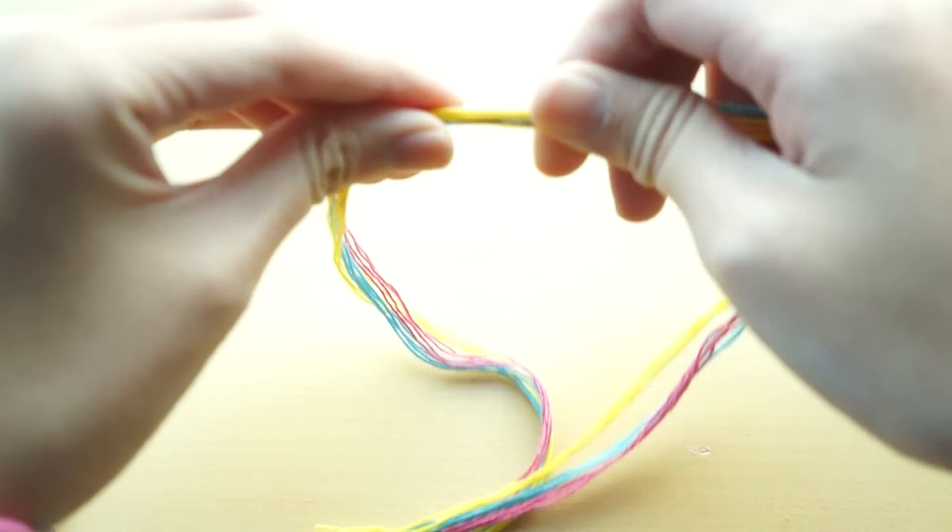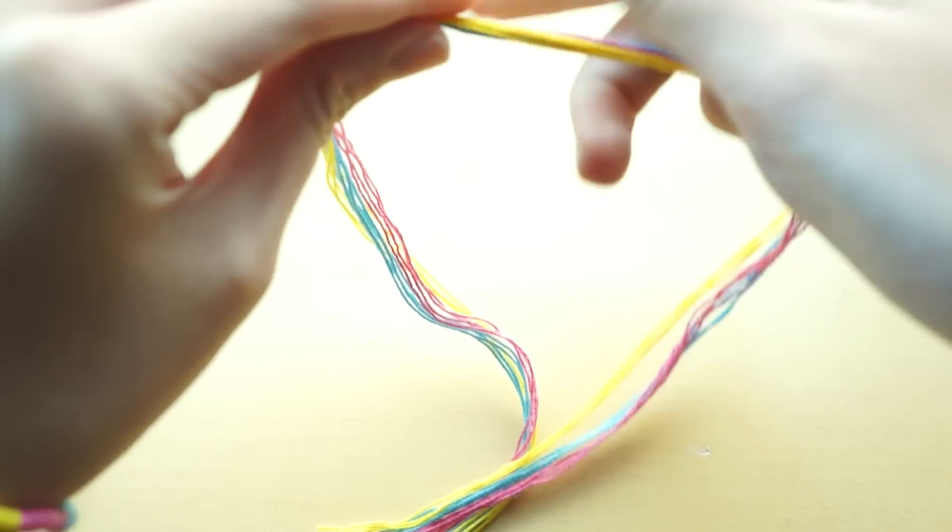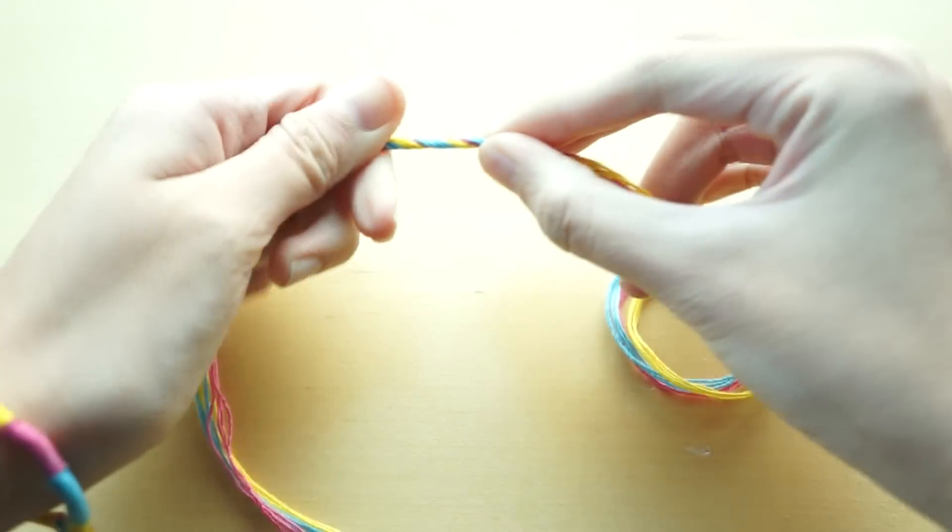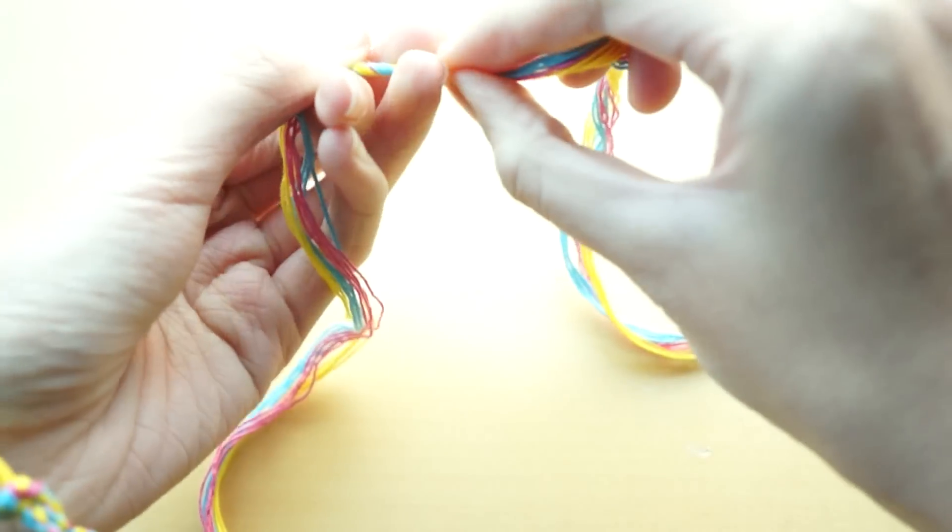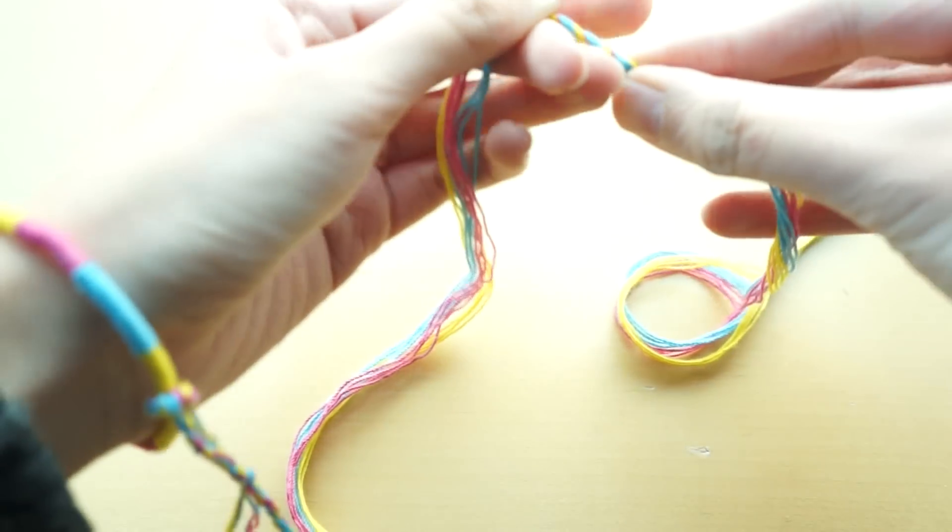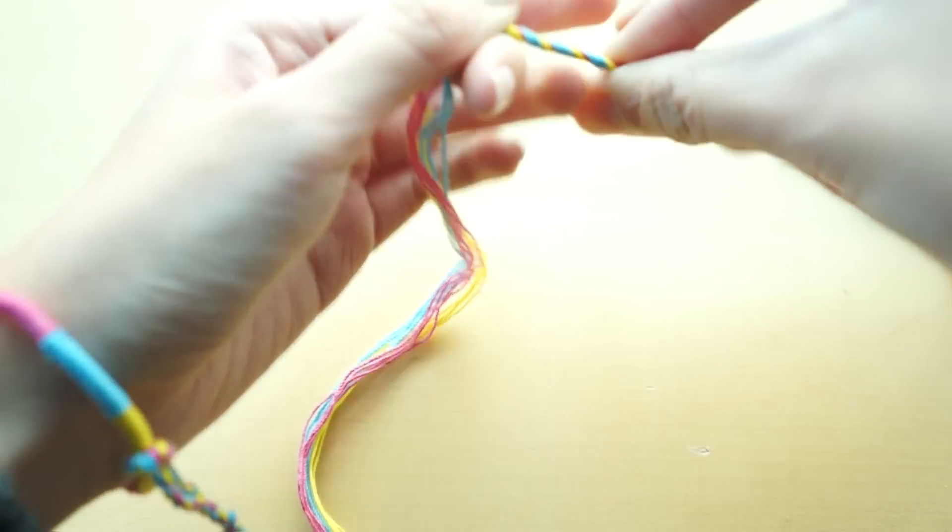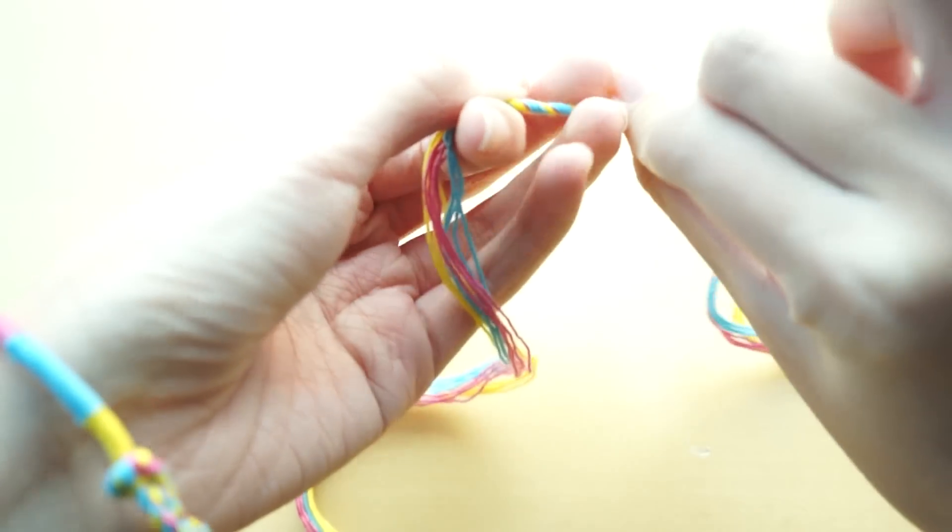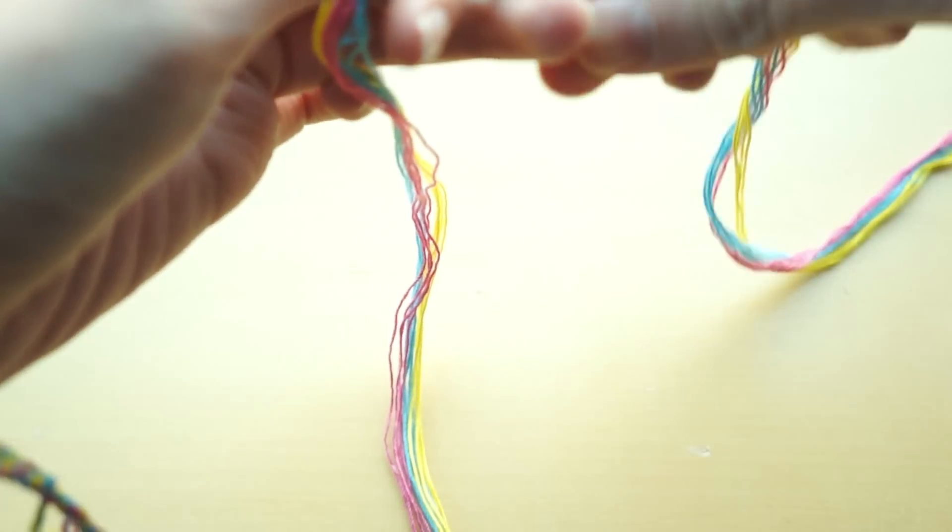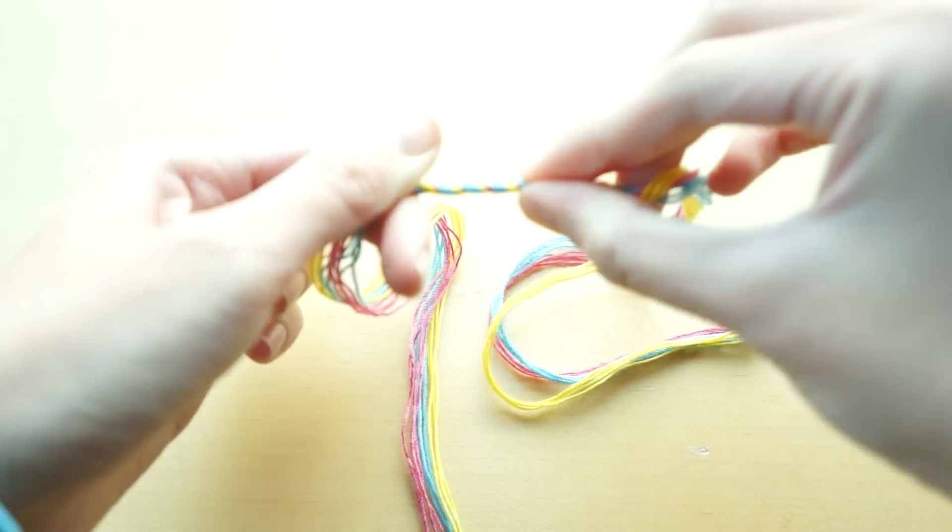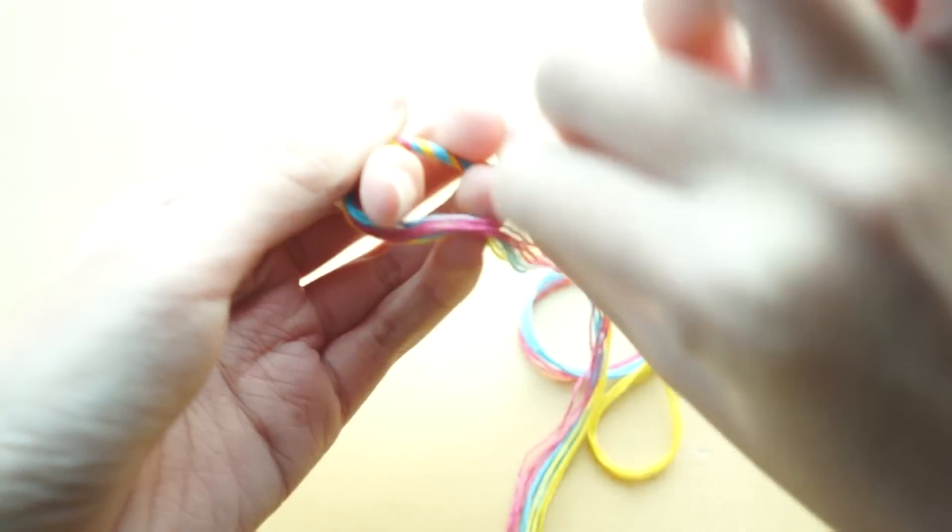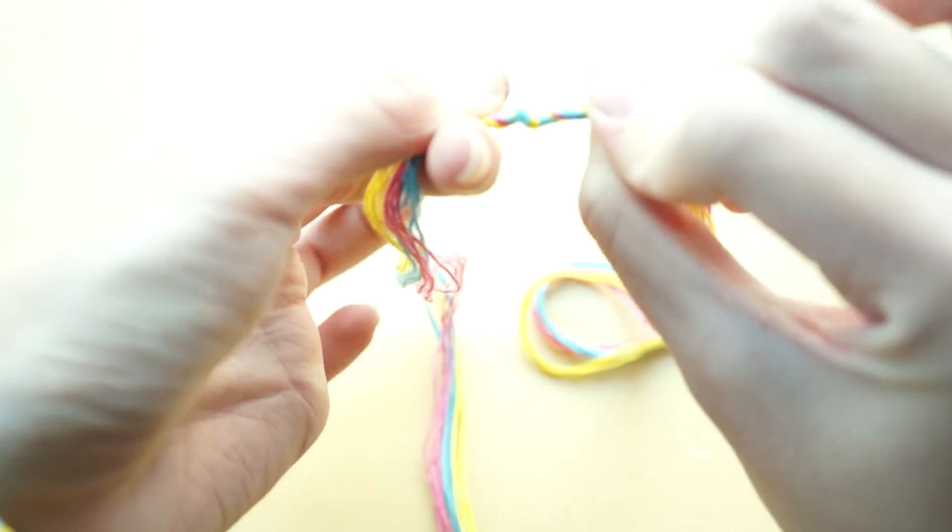So now go to the midpoint and just randomly twist it really tightly. Twist it really tightly. And this will be the hole for you to wear the bracelet. So you can take off the bracelet and just wear it again. So just twist it very hard.